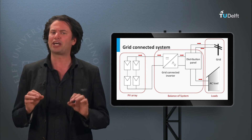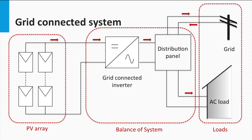First let us look at a typical PV system. Here I show a grid connected PV system. The grid connected topology is especially very common in countries that have supporting solar policies, where excess power generated by the consumer can be fed back to the electric grid. In this case a set of PV panels are responsible for power generation. The PV generated power is not only able to meet the load requirements, but is also able to feed the excess power generated to the electric grid when the supply exceeds the load demand.